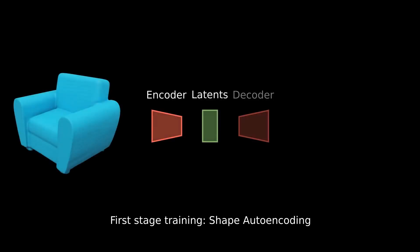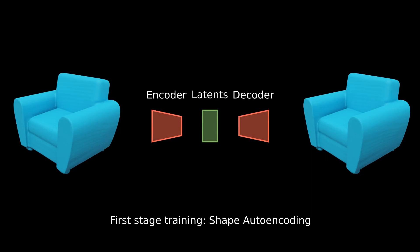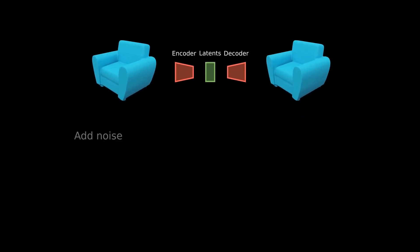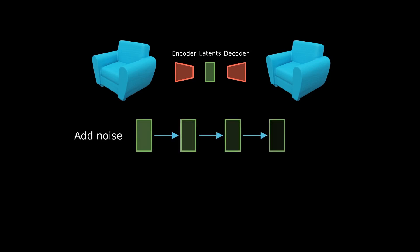Our method has two stages. The first stage is a shape autoencoding framework for 3D neural fields. The second stage is a denoising diffusion probabilistic model trained in latent space. The diffusion contains a diffusion process and a denoising process.